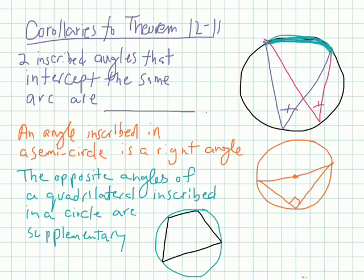We have three corollaries to theorem 12-11, which is the inscribed angle theorem. First says two inscribed angles that intercept the same arc are congruent. Let's look at an example of what I'm talking about here. If we have two inscribed angles, so we have this purple one and the pink one. If they intercept the same arc, then the measure of these two angles will be congruent, which would make sense. Because however many degrees this arc is, half of that will be how much this is, and half of that will be how much this is, meaning these two will be exactly the same.